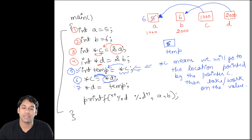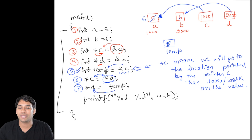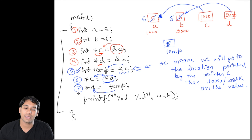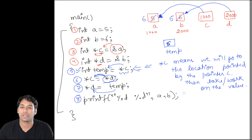In line 7, we do *d = temp. That means we store the value held in temp (which is 5) into the location pointed by d, which is location 2000 (variable b). So b now stores 5. In line 8, we print the values of variables a and b. Therefore, the output will be 6 and 5.